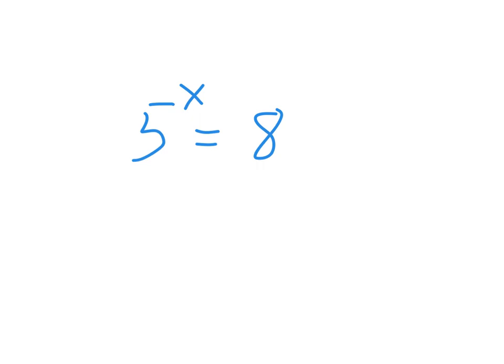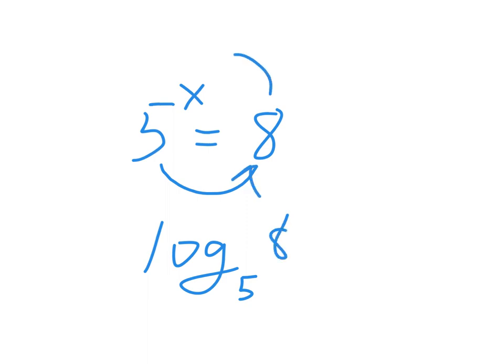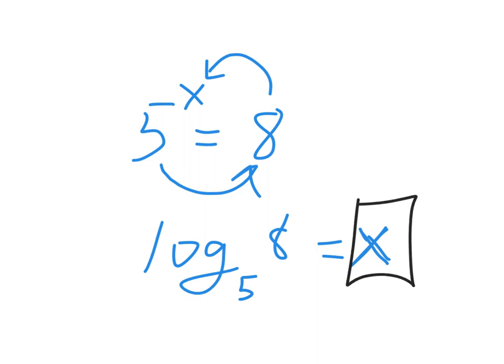Sometimes I say make it a log and you're like, I don't know how to make it a log. Well, start by writing the word log. Then you'll be forced to think, what's next? I guess I need a base — oh, it's base 5. Then I gotta go around here, and it equals x. That doesn't feel very satisfying because I don't know what log base 5 of 8 is, but that's the answer — you can't simplify it anymore. How do you know you're done? X is alone.